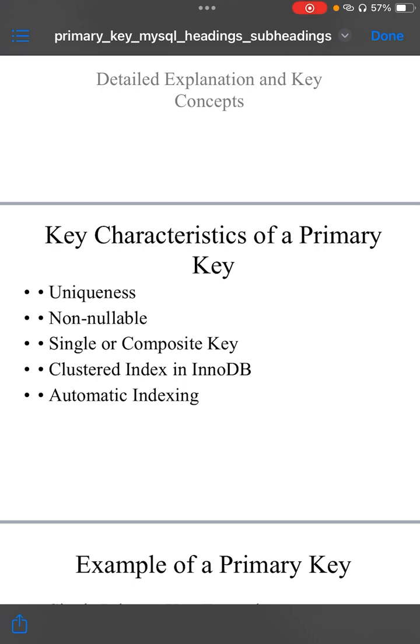Non-nullable. Each primary key column cannot have null values. Every row must have a valid primary key, which guarantees that all records are identifiable.